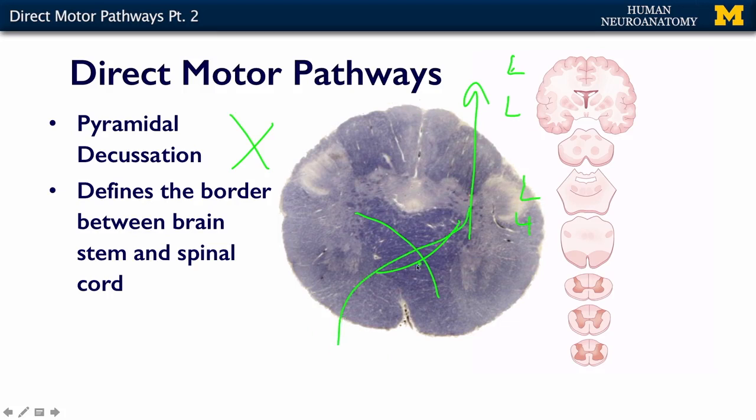This decussation, or crossing, is actually an important region to be aware of, because it is the definition of where the brain stem stops and the spinal cord begins. In the next segment, we're going to talk about how this pathway — which started with our upper motor neurons and traveled through the brain stem — now crosses and goes into the spinal cord, where we'll call it the corticospinal tract.